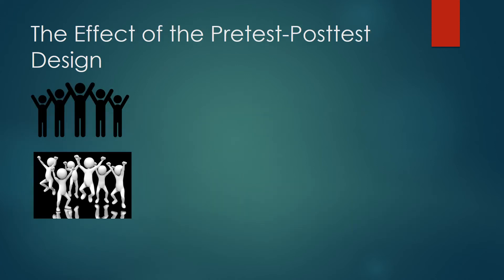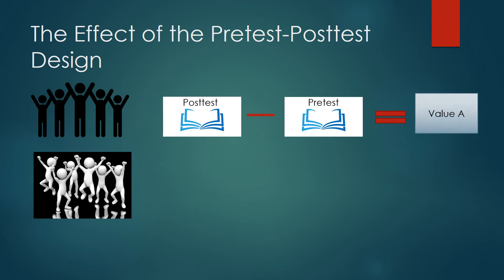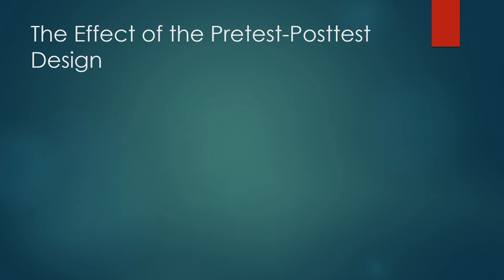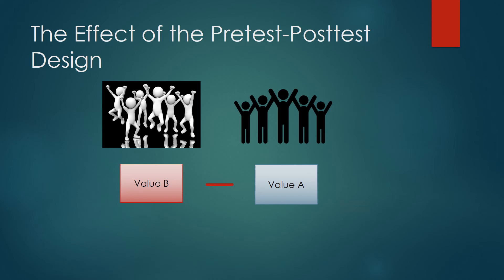The pre-test post-test design measures the difference in post-test and pre-test scores between each group. Take the control group, subtract their post-test scores from their pre-test scores to get a value. Do the same for the treatment group. By subtracting the treatment group scores from the control group scores, we figure out the effect of our treatment — the effect of our educational session on influenza knowledge.